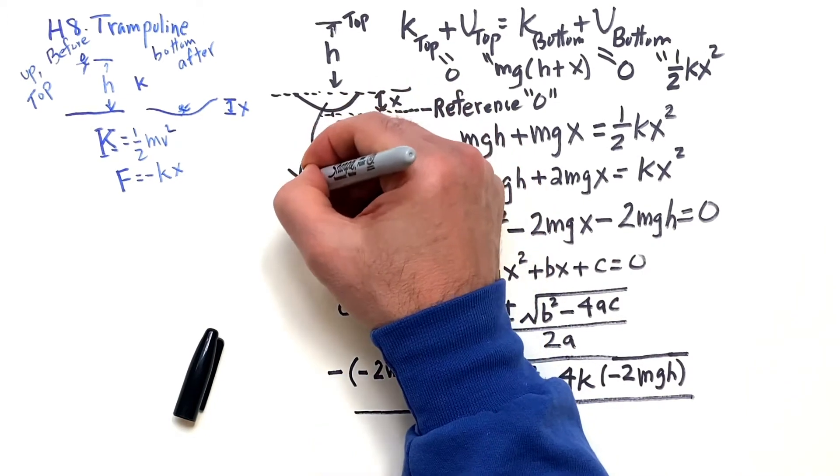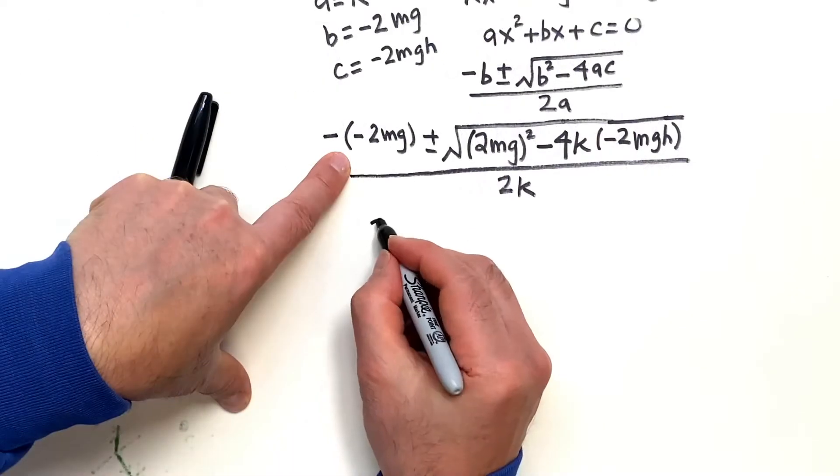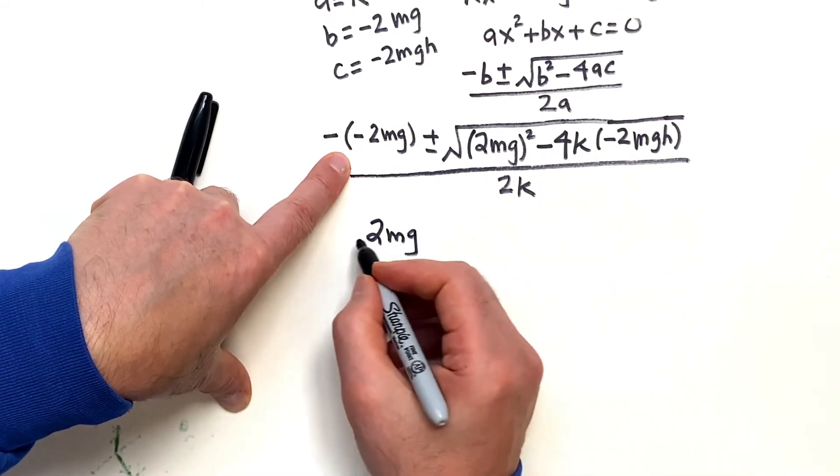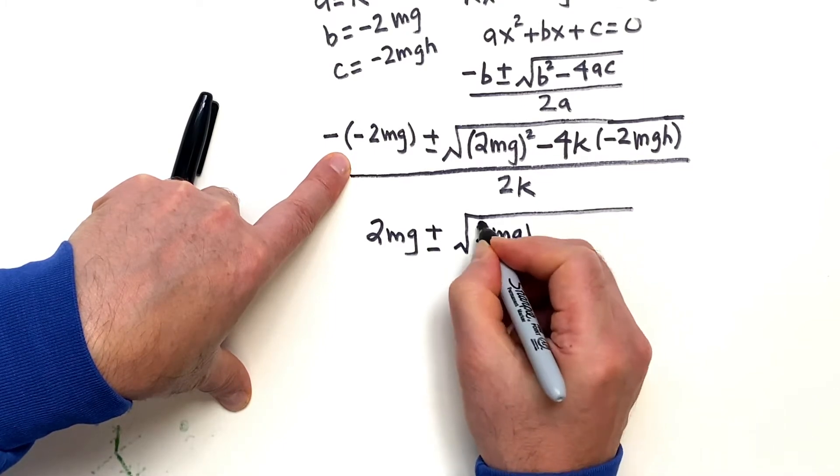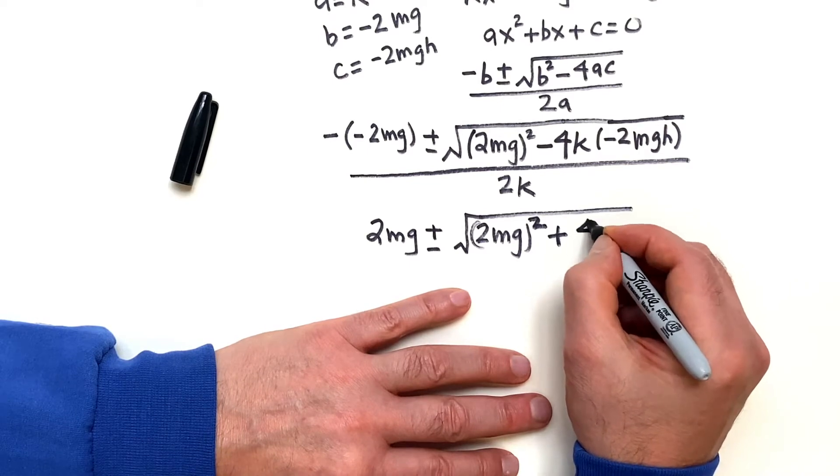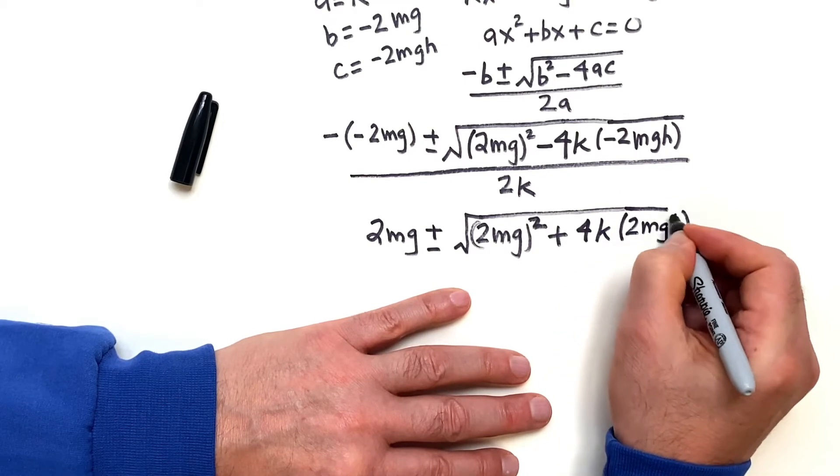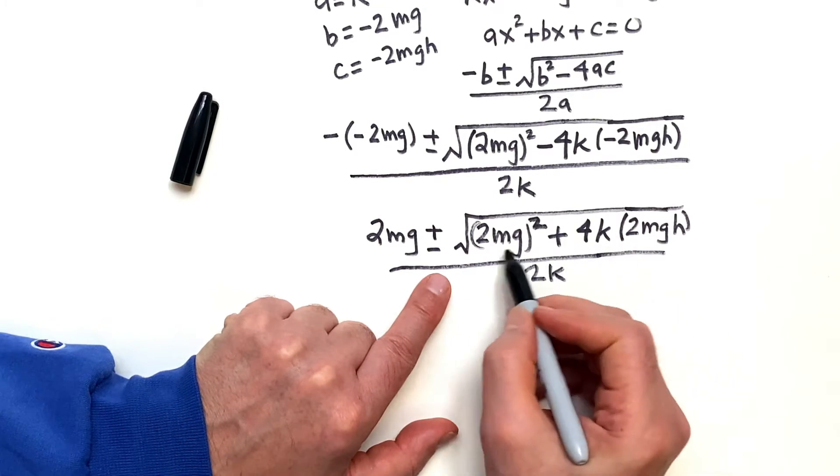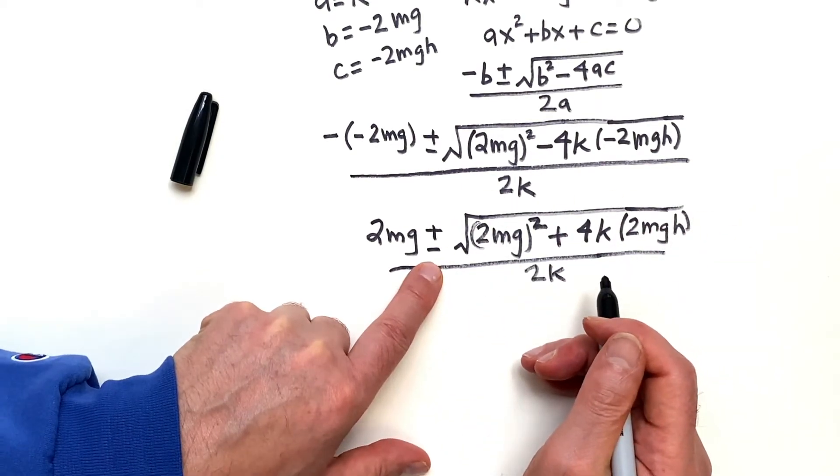Now, since x is positive, let's see what we have here. We're going to have a positive 2mg here. But when you take the square root of this thing, since this is positive, let's go ahead and do it one more step. This is going to be 2mg squared, and then plus, I'm going to leave that 4 there. Now you can see that this is all positive. So when you take the square root, it's going to be bigger than 2mg. So if you have a minus sign there, that's bad news. You won't get x is positive. So you want the positive solution.